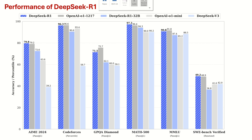This graph shows the performance of the DeepSeek R1 model. The rectangles with blue hatching represent the performance of DeepSeek R1. On the y-axis you can see accuracy in percentiles, and you can see different test cases. The gray rectangles represent the performance of OpenAI-O1, and you can see that the performance is almost similar.